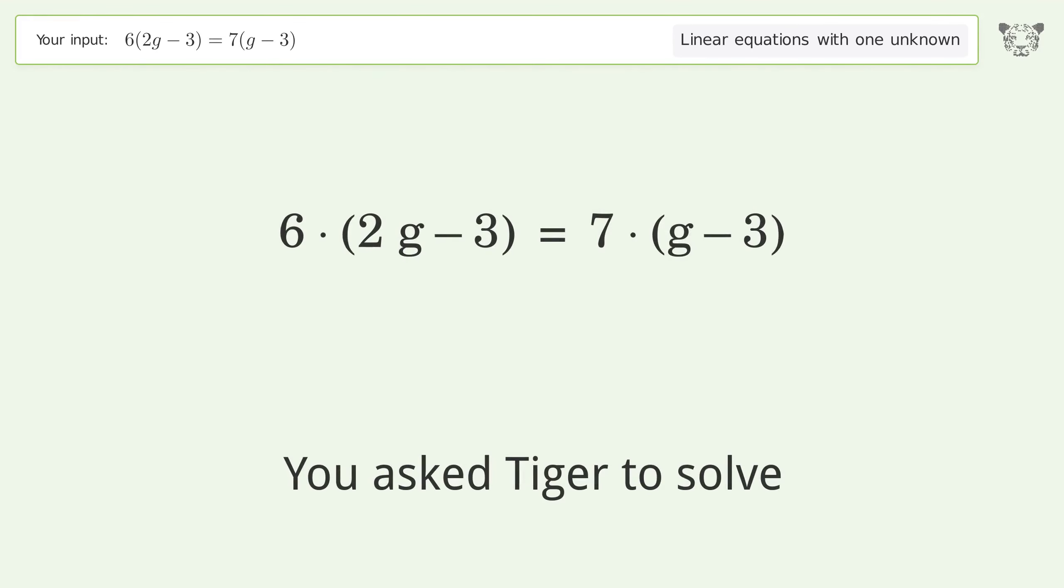You ask Tiger to solve this. This deals with linear equations with one unknown. The final result is g equals negative 3 over 5.